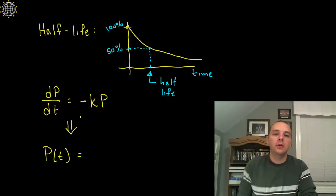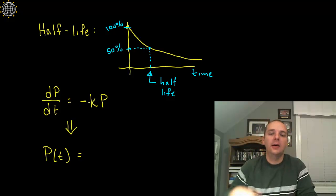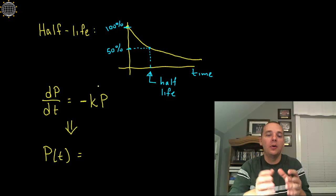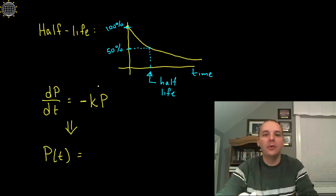Some textbooks will write the negative assuming that K is positive, others will just keep the exact same model and not worry about putting a negative, assuming that K itself could be negative. But however you interpret it, just be aware for exponential decay problems your growth rate, whether it be just the K or negative K, is going to be a negative quantity.